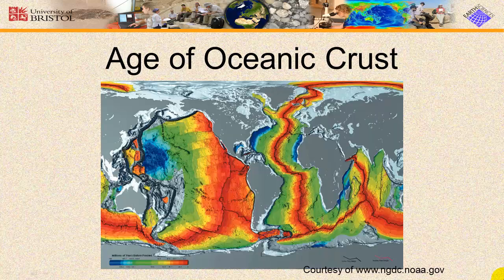This map shows the age of the oceanic crust. The red color shows the youngest aged rock, and the blue color shows the oldest aged rock, about 200 million years old. So where are the ocean ridges located, or where are the divergent boundaries? The divergent boundaries are where the plates are pulling apart and new material is being produced. Therefore, ocean ridges are in the middle of the red material, because red is showing the youngest rock — new magma is being pushed up as these plates are being pulled apart.